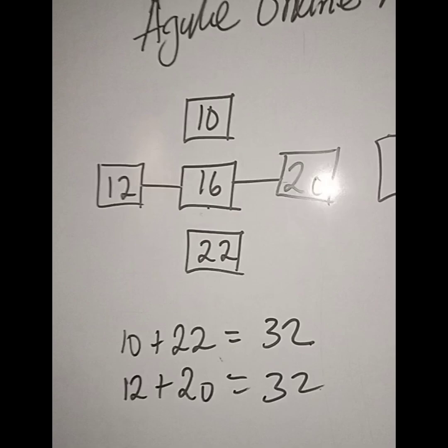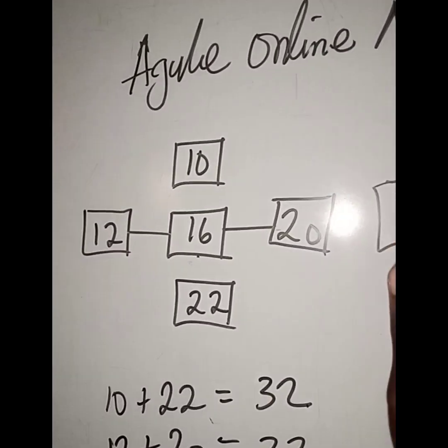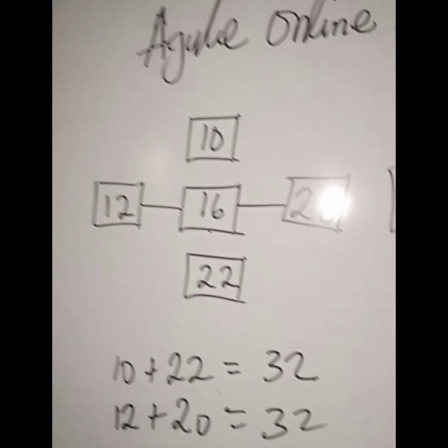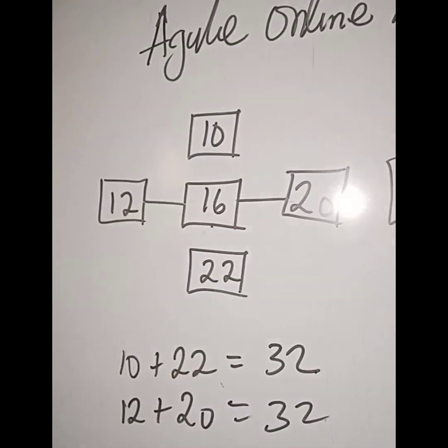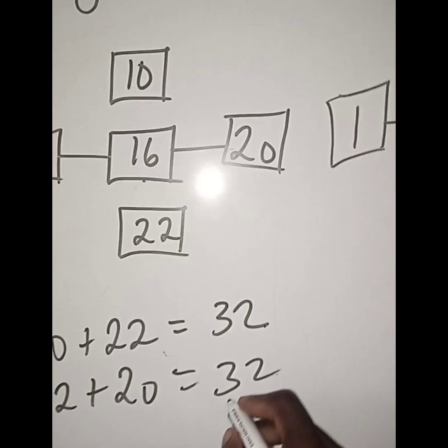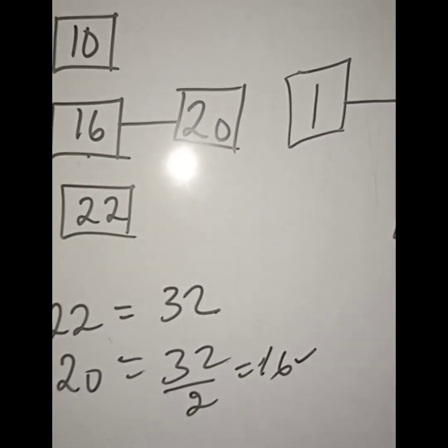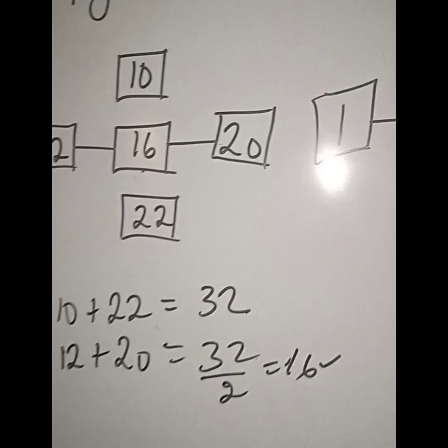It means that if we add like this, you'll get 32. If we add like this, you'll still get 32. So, to get the one in the middle, you just divide your answer by 2. 32 divided by 2 will give us 16. This is very simple.